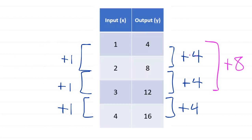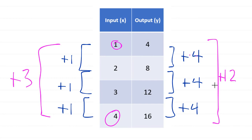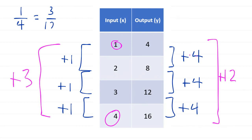As a last example: if I go from x equals 1 to x equals 4, that's an increase of 3. If this is linear, the corresponding output change should be plus 12 — and it is, plus 12. And 12 divided by 3 is still 4. The ratio of change in output to change in input is always the same — 1 over 4 equals 3 over 12 — these fractions are equivalent, meaning proportional.